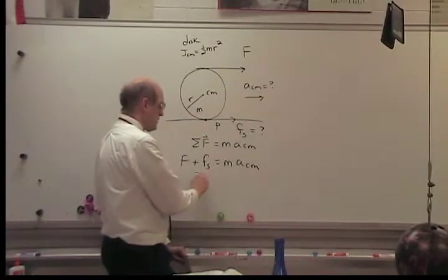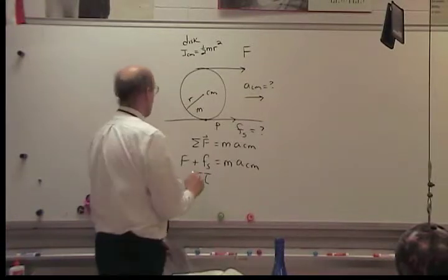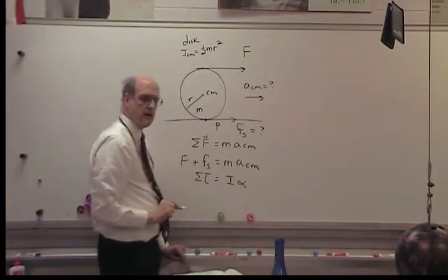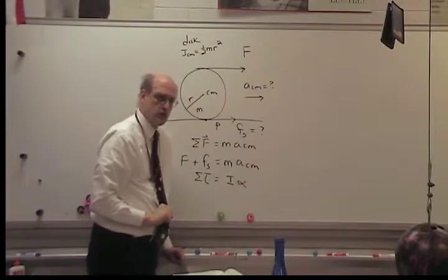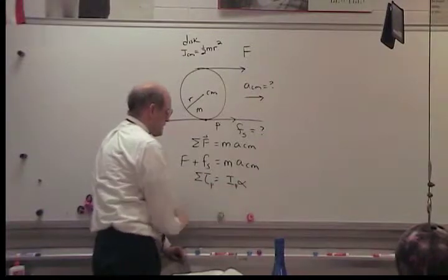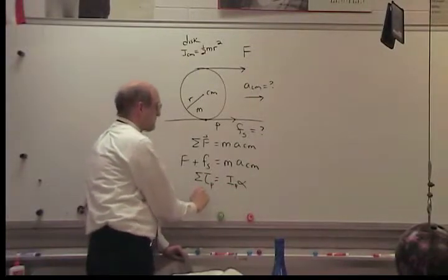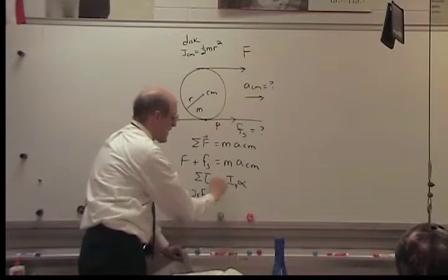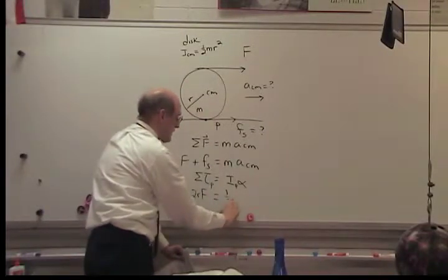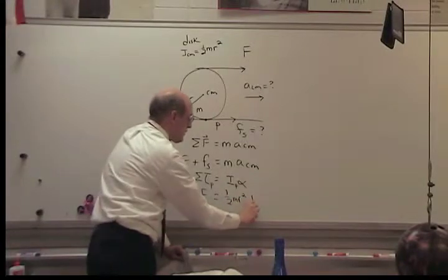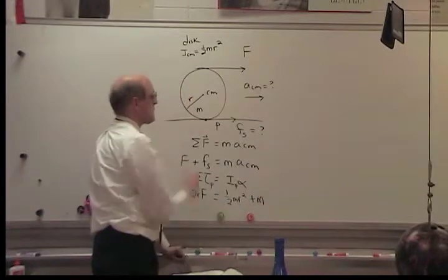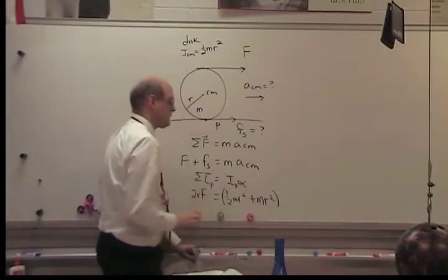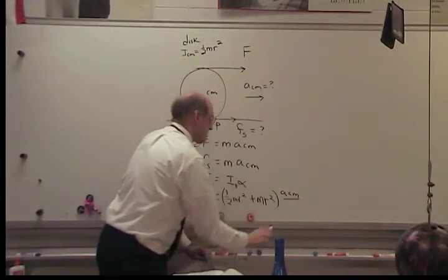Next, I'm going to use Newton's second law of rotation: the net torque equals I·alpha. I'm going to sum torques about P, and that way I'll eliminate the force of static friction's torque. Sigma tau_P equals F times the lever arm 2R, which equals I_P — that's I_cm, one-half mR squared, plus the mass of the disk times R squared (using the parallel axis theorem) — times alpha, which equals A_cm over R.